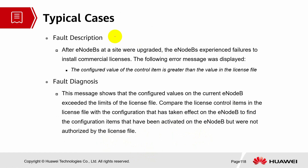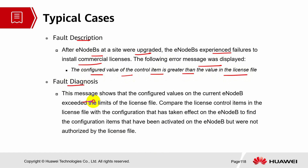Typical case — fault description: After an EOB at a site was upgraded, the EOB experienced failures to install a commercial license. The following error message was displayed: 'The configured value of the control item is greater than the value in the license file.' Fault diagnosis: this message shows that the configured value on the current EOB exceeded the limits of the license file.